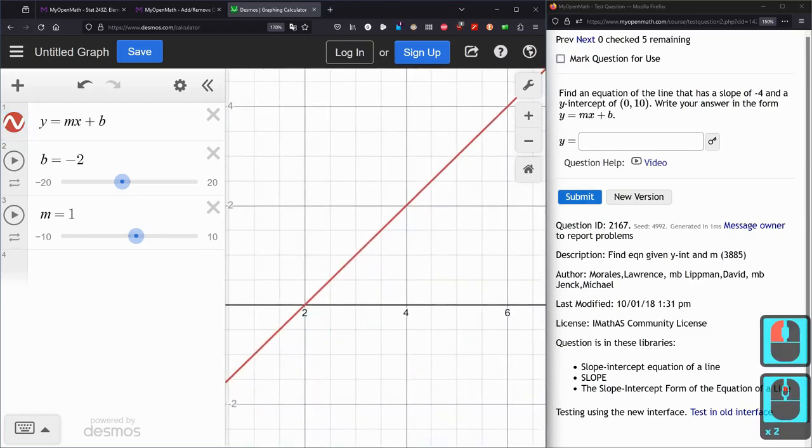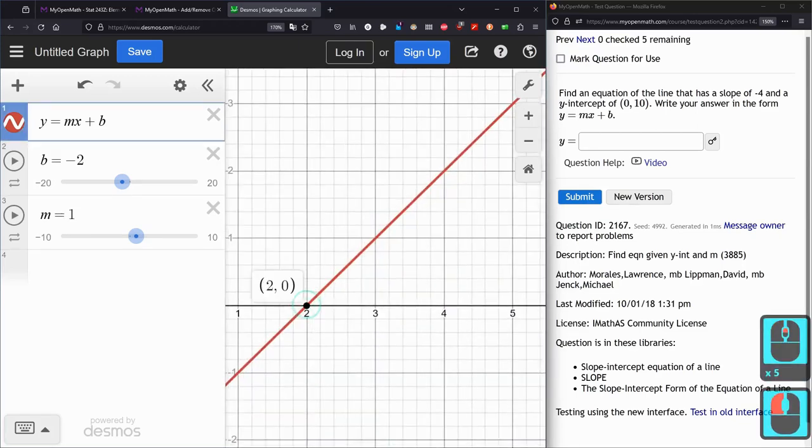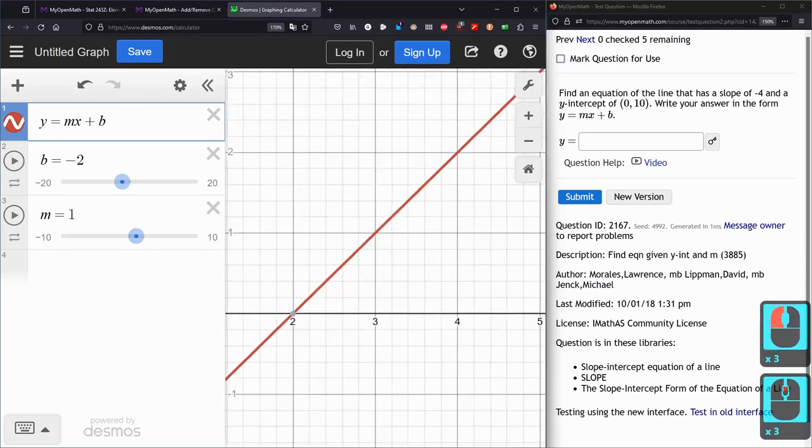Maybe this is easier to see with positive values. So here, if I start with 2, 0. If I go right 1, right here. Over 1, up 1. That's what a slope of 1 is.